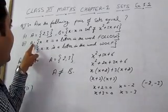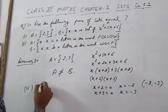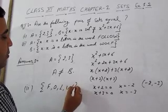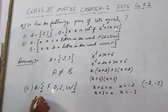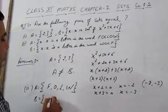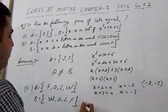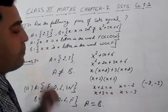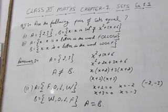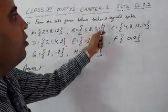In the second part, set A is {x : x is a letter in the word FOLLOW}. Writing in tabular form: A = {F, O, L, W}. Set B is {x : x is a letter in the word WOLF}, giving B = {W, O, L, F}. Clearly all elements are the same, therefore A is equal to B.